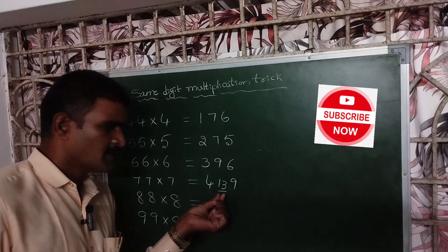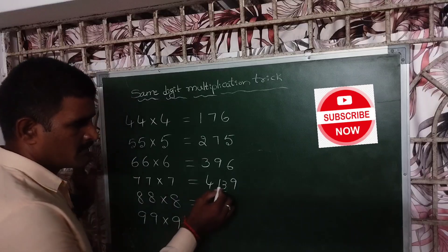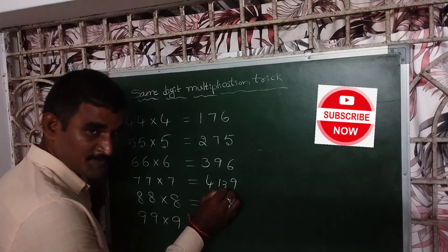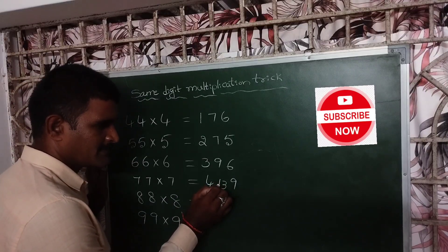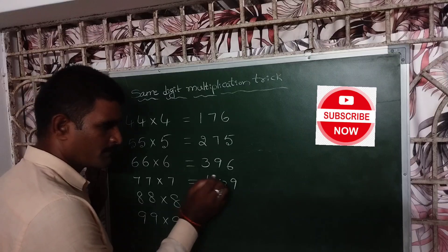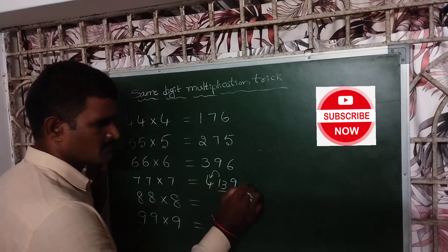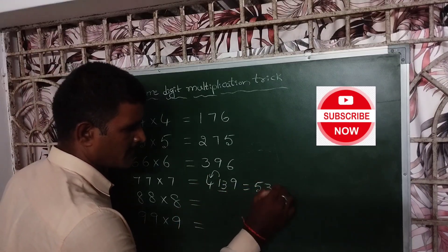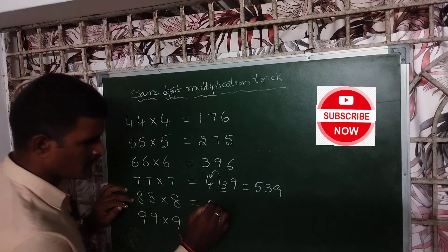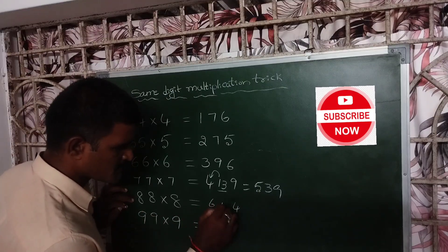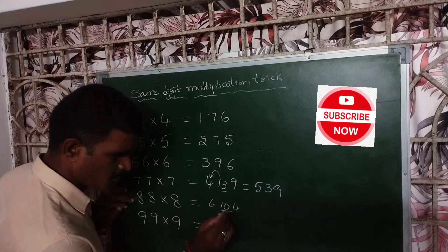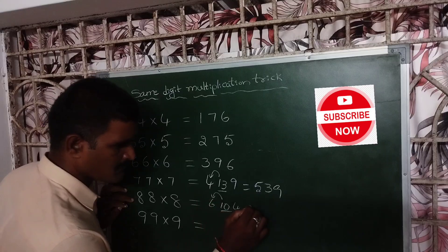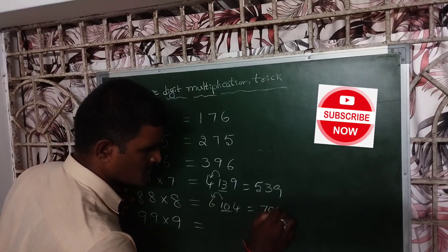Dear friends, when two digits come, first keep this unit space digit and add this 10 space digit to the previous number. That is 539. And 88 into 8, 8 eights are 64, 6 plus 4 equals 10. Keep this 0 and add this 1 to previous number 6. So, 704.